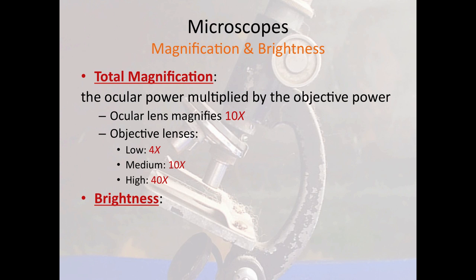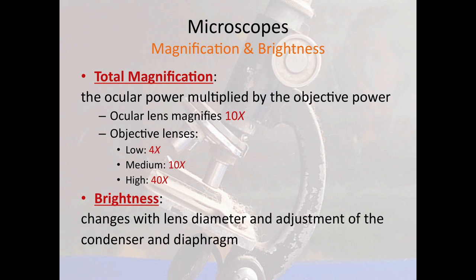You will notice on the microscopes in lab that there is a fourth objective lens. We won't be using those — that's an oil immersion lens. If you see your lab partner trying to look at something through that fourth objective lens, tell them they are not qualified to be using that expensive piece of equipment. Regarding brightness: the brightness of the image changes both with your choice of objective lens and by adjusting the condenser and the diaphragm. Many students who are convinced they've mastered microscopy say they can't find anything, because they either have no light or too much light shining through the lenses. Figure out how to adjust the light and you'll be two steps ahead.